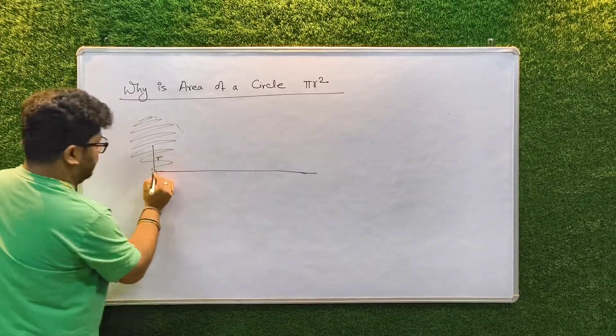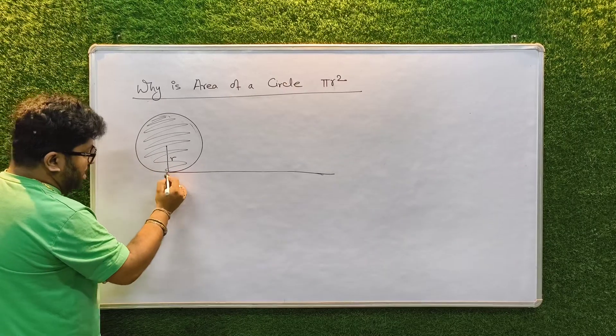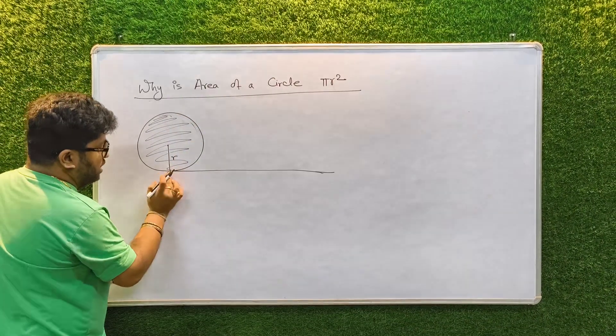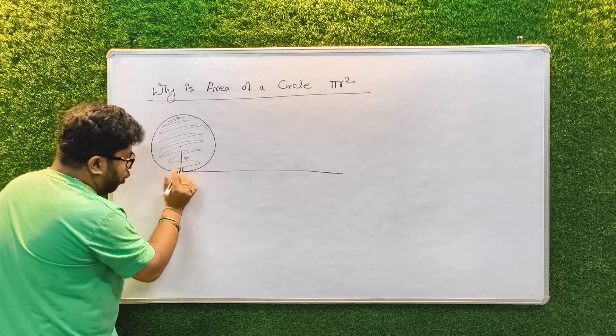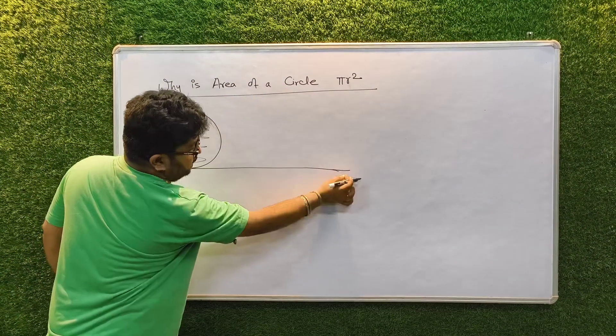That means this circle's perimeter, suppose let us imagine that this perimeter of this circle is made up of a rope. I opened the rope, took the rope by this point and opened it and put it like this.